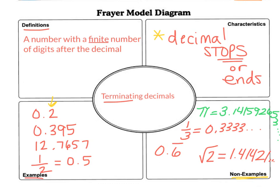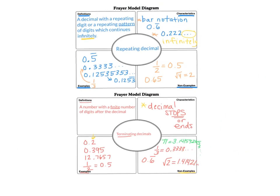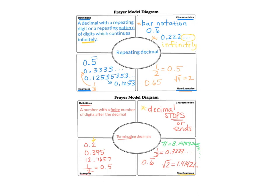Okay, so at this point, you should have the Frayer model filled in for repeating decimal and terminating decimal.